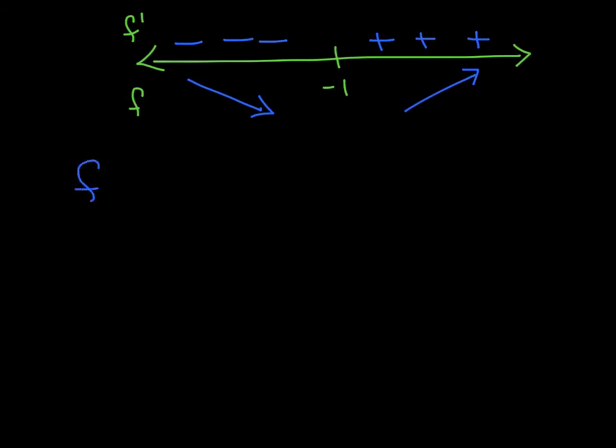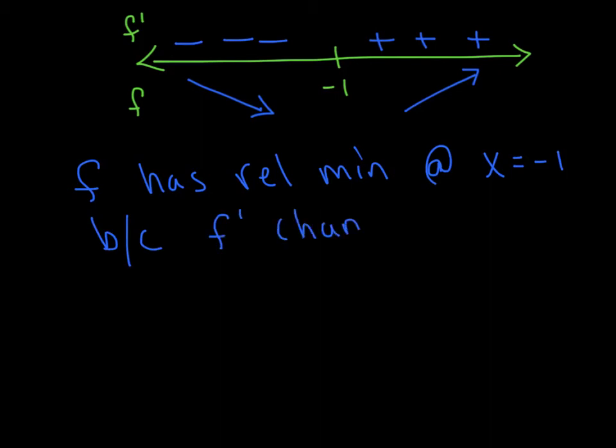So we just determined the function f's decreasing and then changed to increasing. And I'm going to put it all together. I'm going to say f has a relative min at x equals negative 1 because f prime changed from negative to positive. We could also make a comment that there are no relative maxes because f prime never changed from positive to negative.